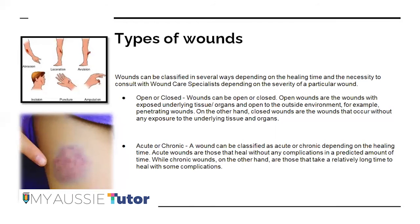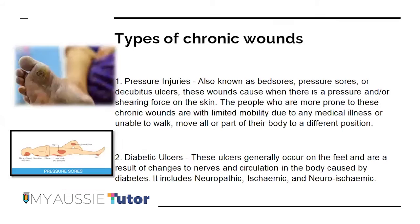A wound can also be classified as acute or chronic depending on the healing time. Acute wounds are those that heal without complications within a predictable amount of time. Chronic wounds take a relatively longer time to heal — for example, a diabetic foot that does not heal and progresses to the necrotic stage. Various types of chronic wounds include pressure injuries and diabetic ulcers.